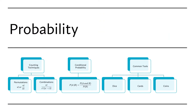For probability, there are three things to review: counting techniques, conditional probability, and the common tools used in probability problems. These common tools include dice, a deck of cards — with 52 cards in a standard deck — and coins. Familiarity with these will help you understand problems quickly. Counting techniques are essential because they give you the numerator and denominator in your probability expression.